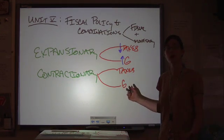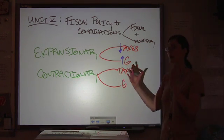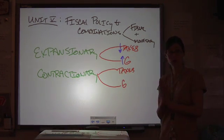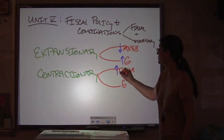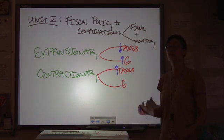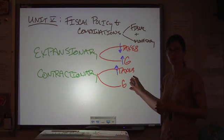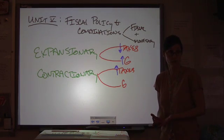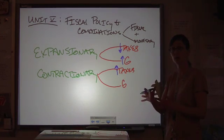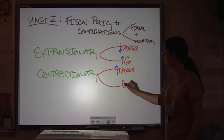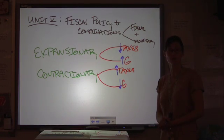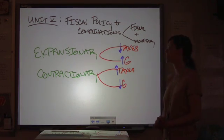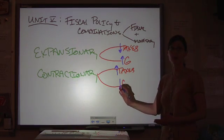Contractionary policies would be the exact opposite. If you want to pull back the amount of spending that's going on in the economy, then you would raise taxes because that lowers disposable income and lowers the revenue that's available for a business, if you're talking about corporate taxes, and pulls back aggregate demand. Similarly, you would reduce government spending because that's also going to reduce aggregate demand.